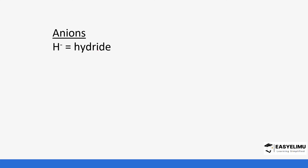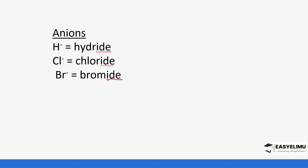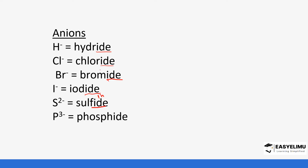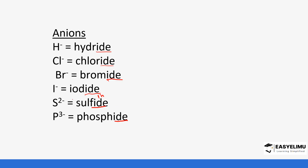Next we look at anions, still among the 20 elements, and how we name them. When you look at anions they are usually named by adding '-ide'. The anions will always end with '-ide'. So the chlorine ion is now called chloride ion, bromine becomes bromide, iodine becomes iodide, sulfur becomes sulfide, and so forth. That is how we usually write the names for anions.